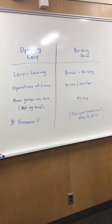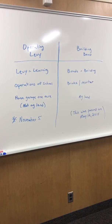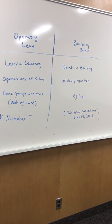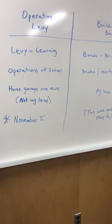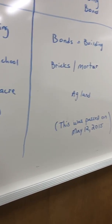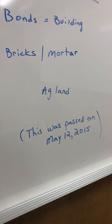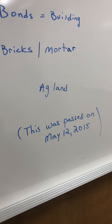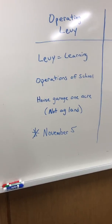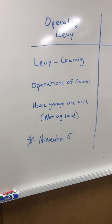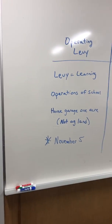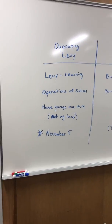They're also taxed differently. The tax on an operating levy only taxes the house, the garage, and one acre, whereas the building bond taxes the agricultural land. Once again, on November 5th we are asking our voters to approve the operating levy, so that does not tax the agricultural land.